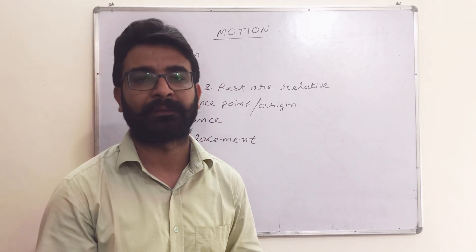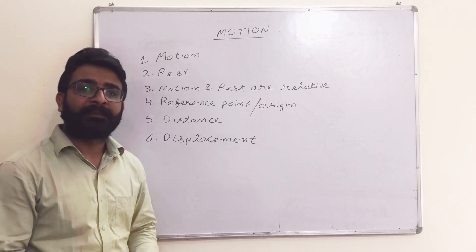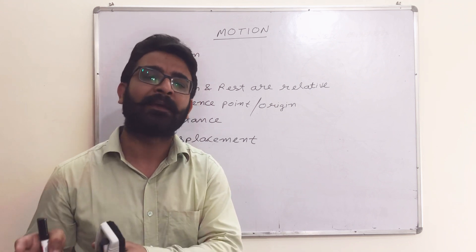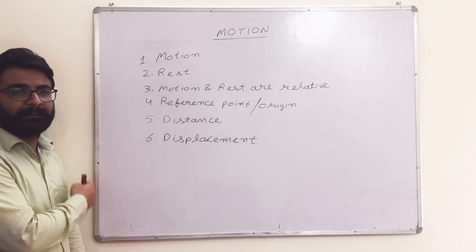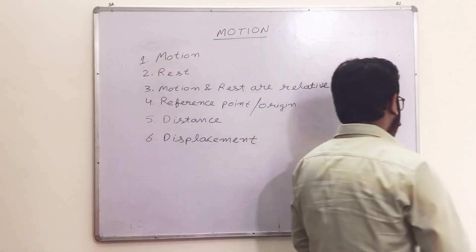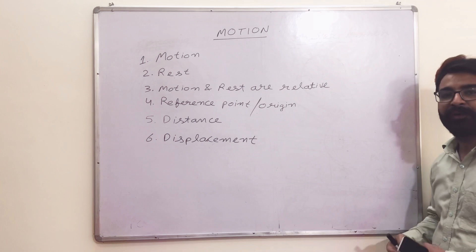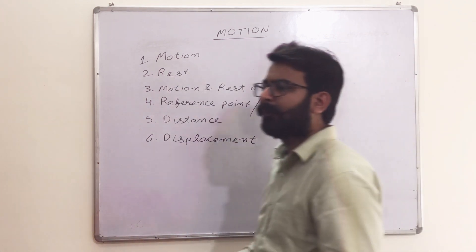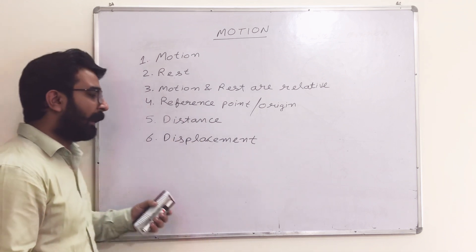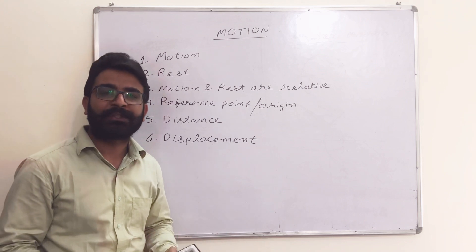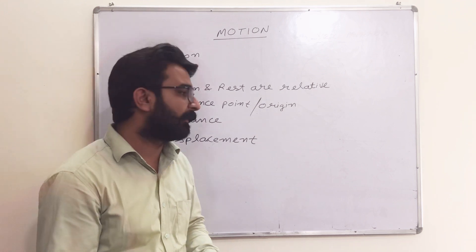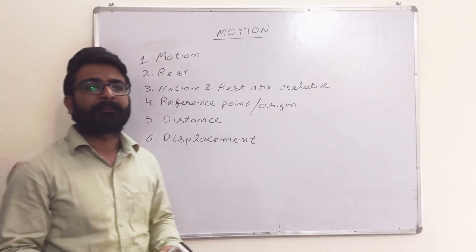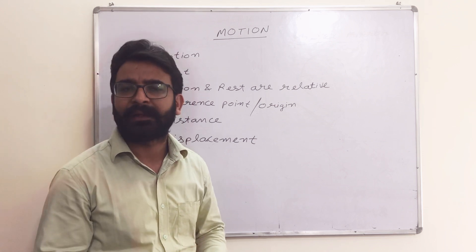So what is the definition of motion? When an object changes its position with respect to its surrounding and time, that object is said to be in motion. For example, I was on this side of the board, then I moved to the other side — I was in motion. I am continuously changing my position with respect to my surrounding and with respect to time, so I am in motion.